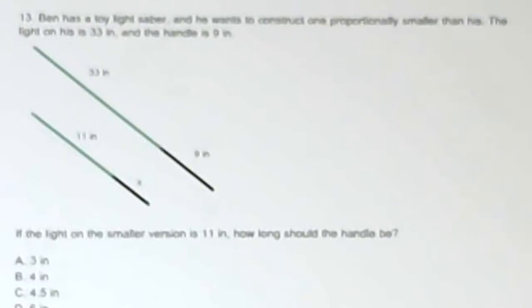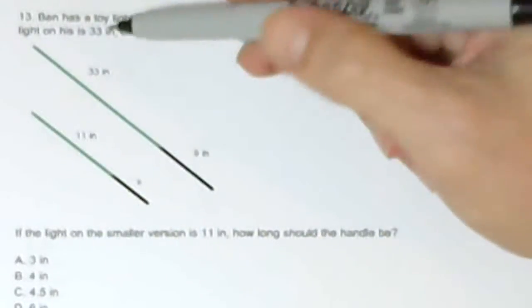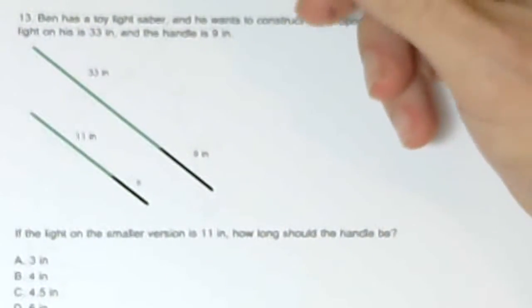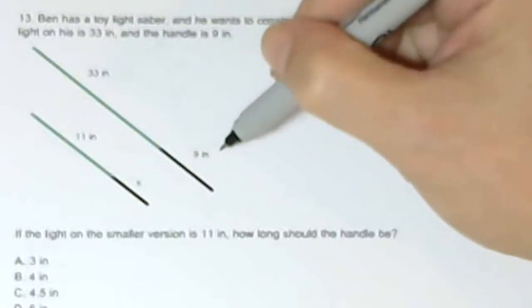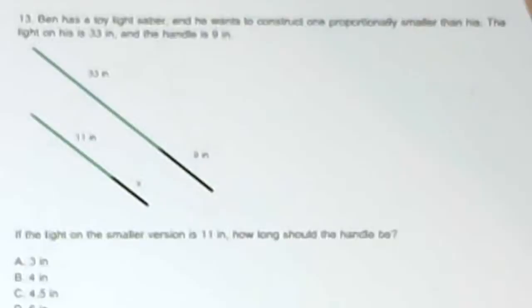Number 13. It says Ben has a toy lightsaber and he wants to construct one proportionally smaller than his. The green portion on the actual saber is 33. The handle is 9. If the light on the smaller version is 11, how long should the handle be?